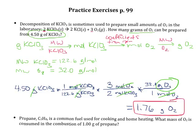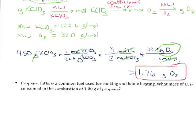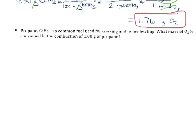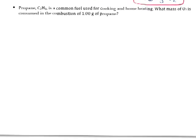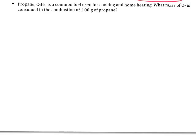Every time you do these problems, come up with your game plan first. Don't plug in numbers until you understand exactly what you're doing. Now let's look at the second problem. We're starting with propane, C₃H₈. They tell us we're starting with grams of propane and want the mass of oxygen — so we're again going from grams of one substance to grams of another. But this time, they're not giving us a balanced chemical reaction, and without it we can't determine mole ratios, so we must write one.